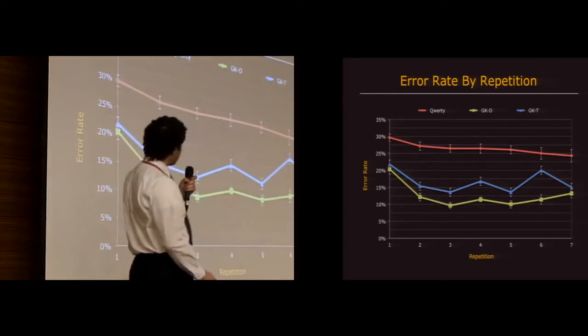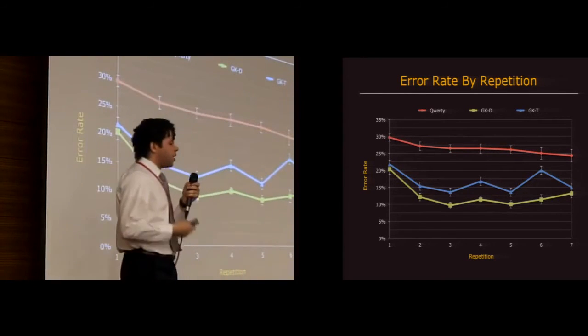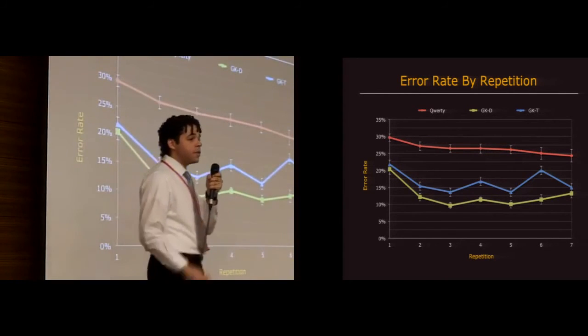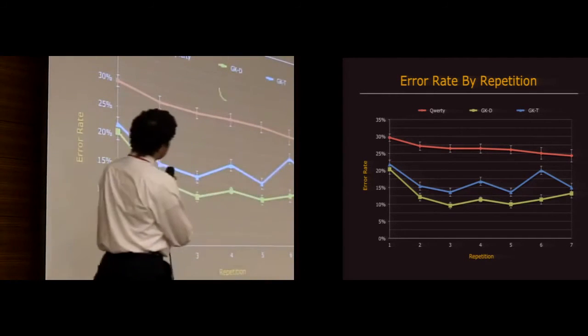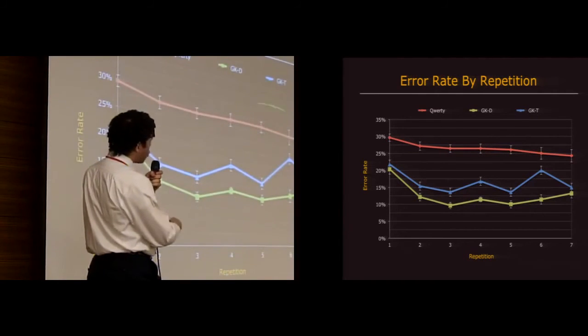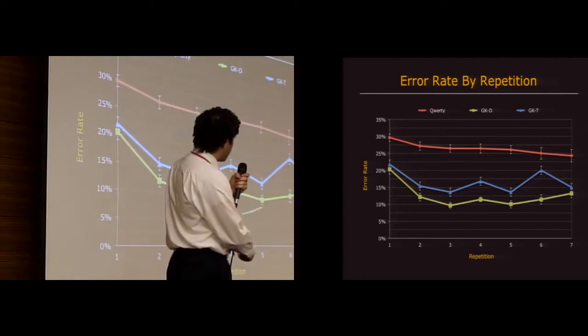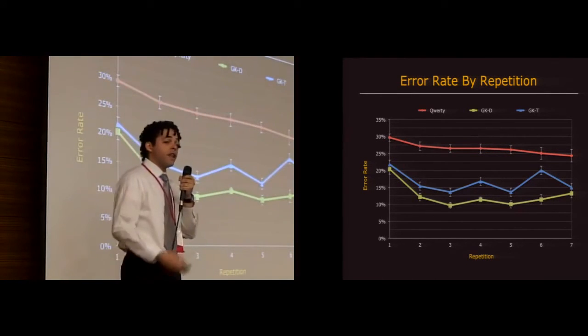So regarding clarity and typing error rate, we found that keyboards that incorporate gesture clarity in their optimization lead to lower error rates than those without. So the double and triple optimized layout, which included clarity, have much lower error rates than QWERTY, for example. If you look at the double optimized layout on the bottom here, we actually reduce error rates by more than half. So users had to gesture words seven times in succession, and so that's why you see seven things here on the horizontal axis.